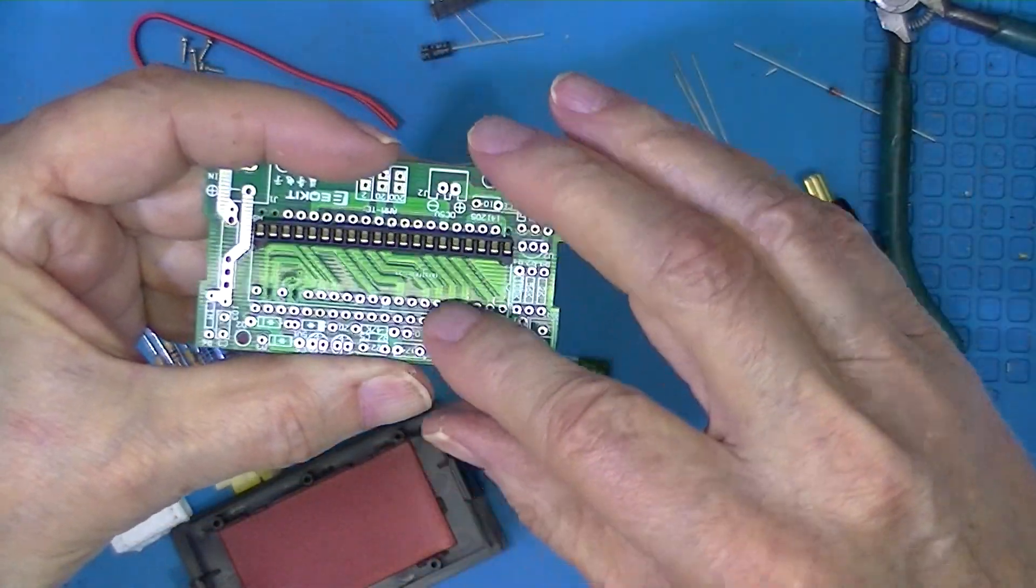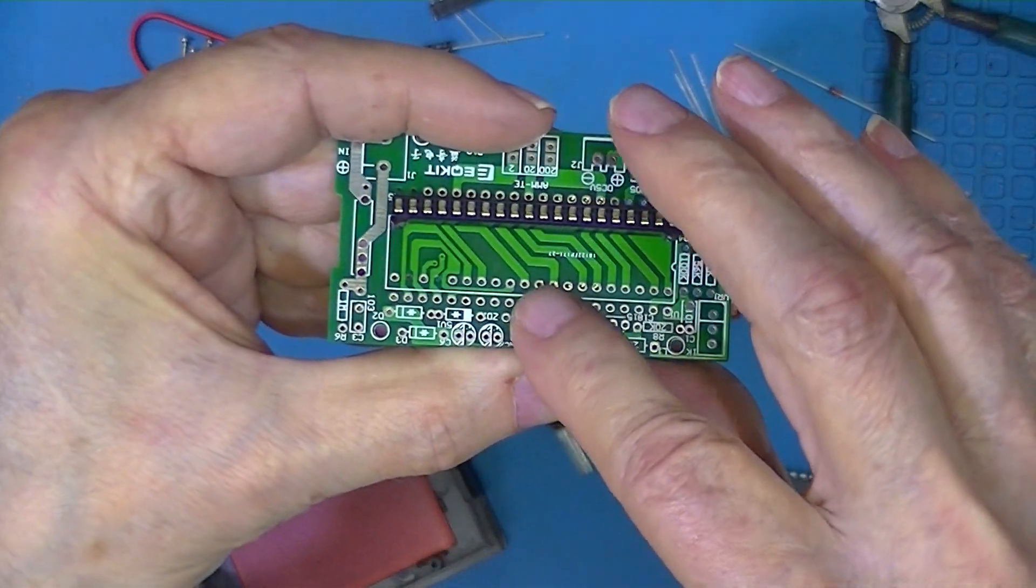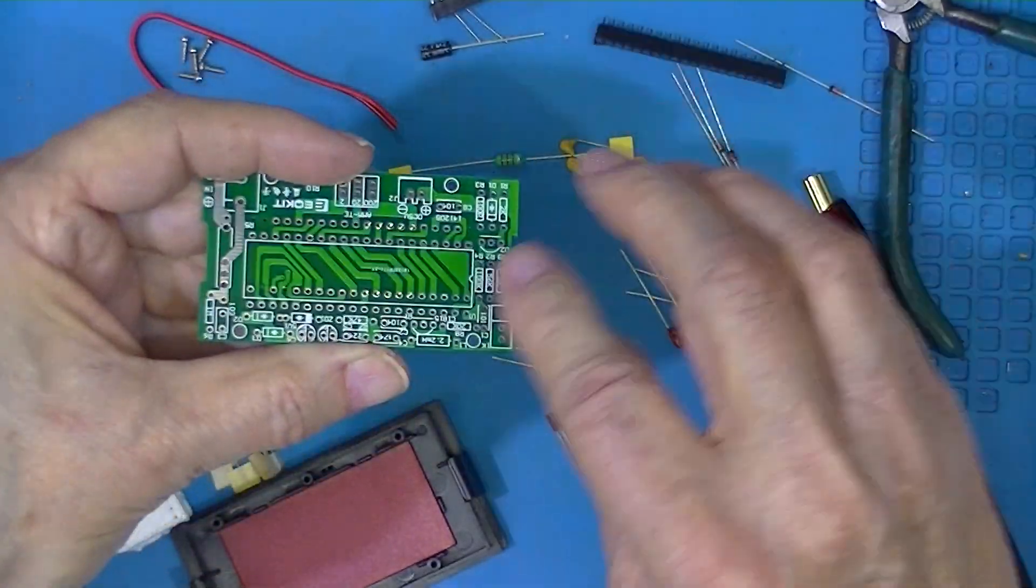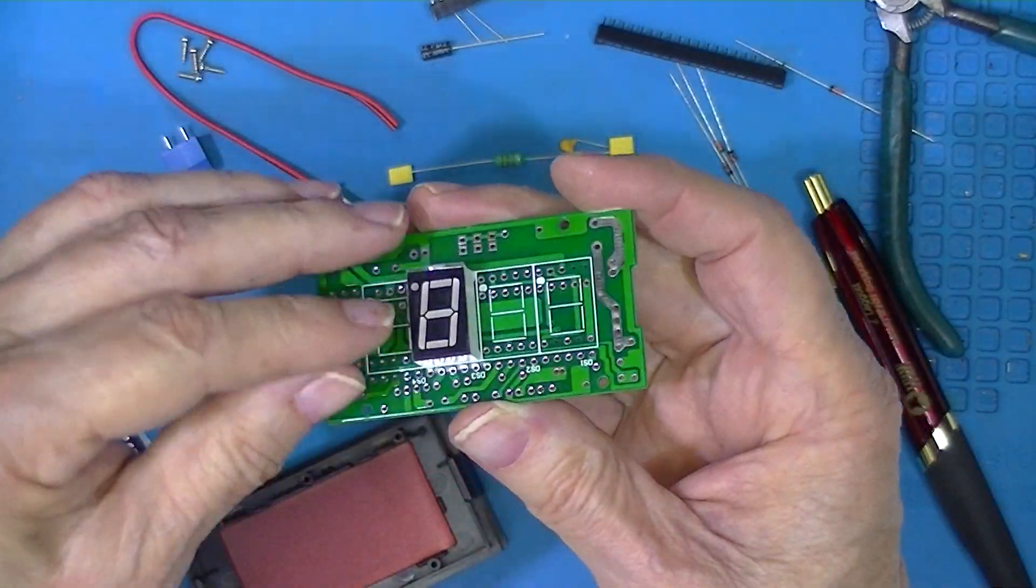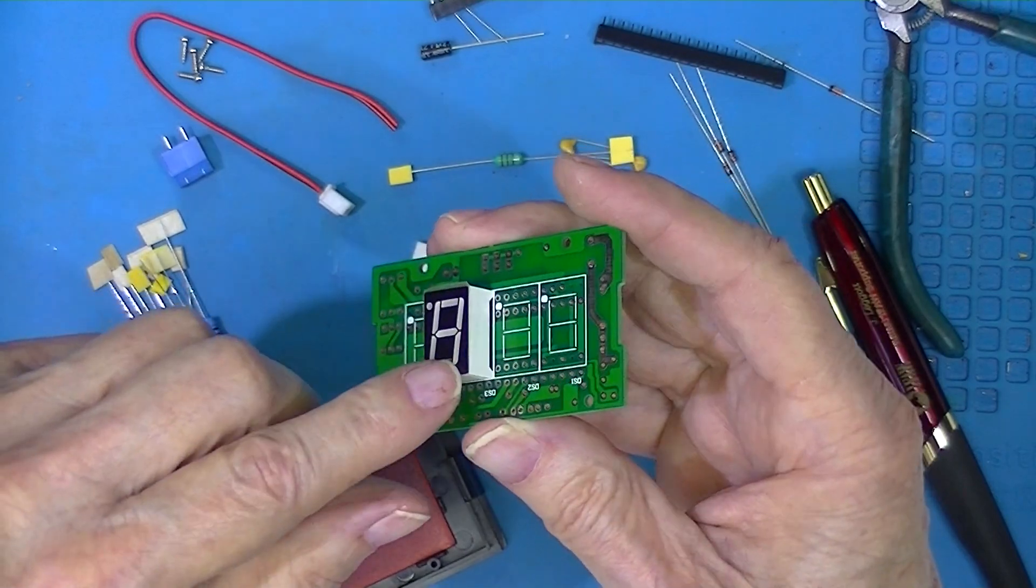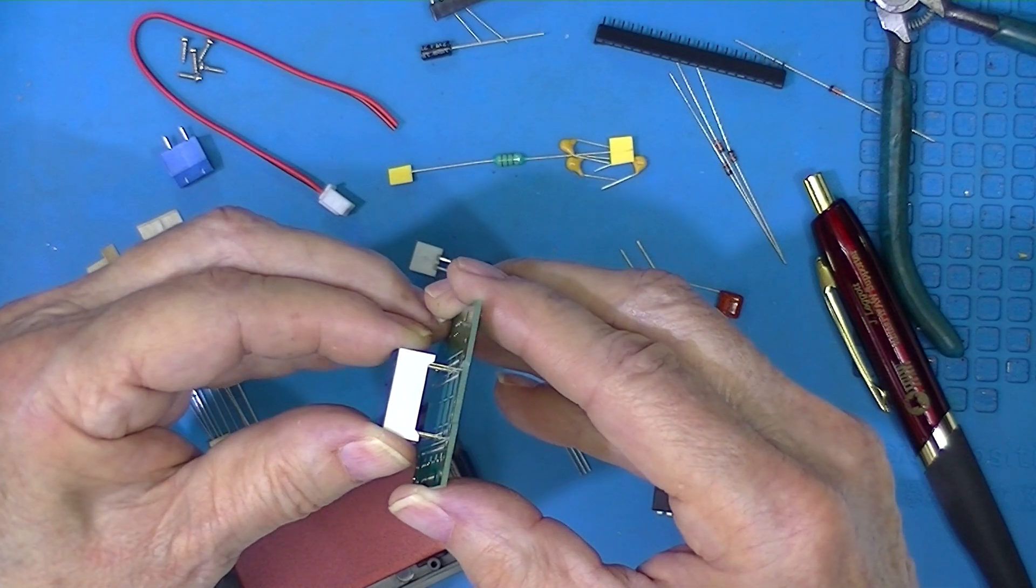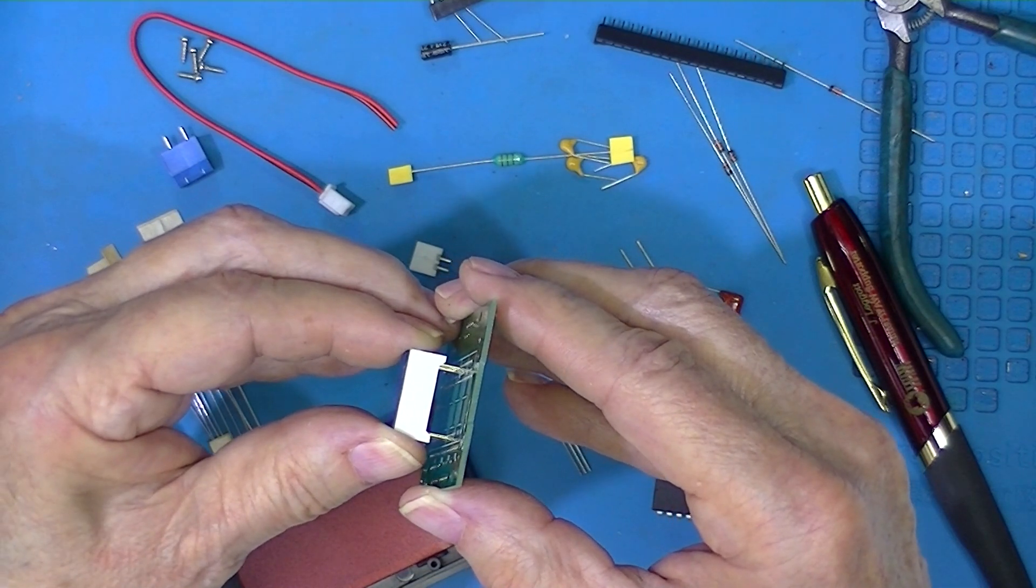If I install the socket first I can't get to these, and you see I can't get to these on the top of the board either because they're underneath the enclosure.